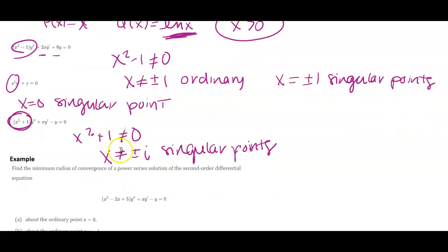All right. The next example we need to look at is find the minimum radius of convergence of a power series solution. And this one is actually going to have some complex singular points. I want to do an example using this one up here first, where we have real singular points, and then pull into the complex one.